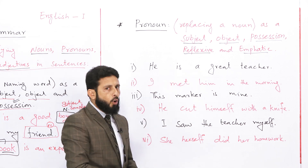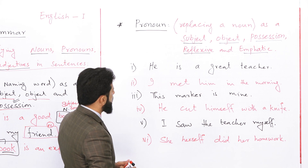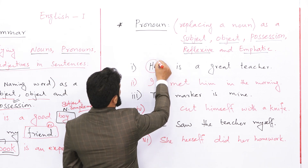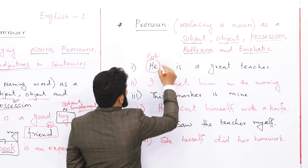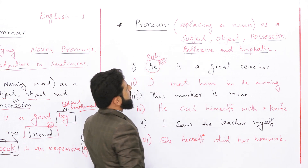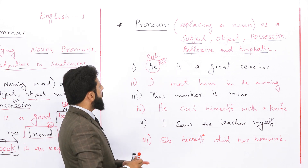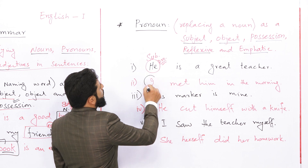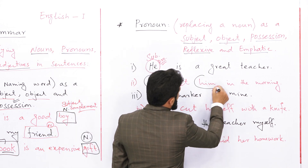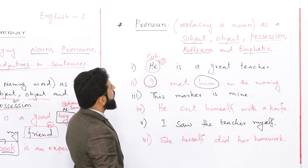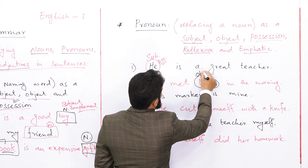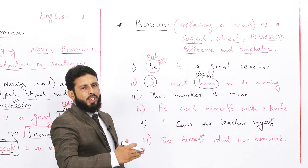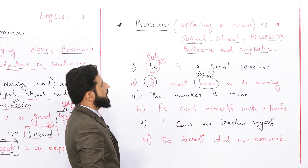پہلے sentence کو دیکھیں: 'He is a great teacher'۔ اس sentence میں 'he' subject ہے اور pronoun ہے — یہ pronoun as a subject of the sentence ہے۔ دوسرے sentence کو دیکھیں: 'I meet him in the morning'۔ یہاں دو pronouns ہیں: 'I' subject of the sentence ہے اور 'him' object of the sentence بن گیا۔ 'Him' pronoun ہے لیکن اس کا function object ہے۔